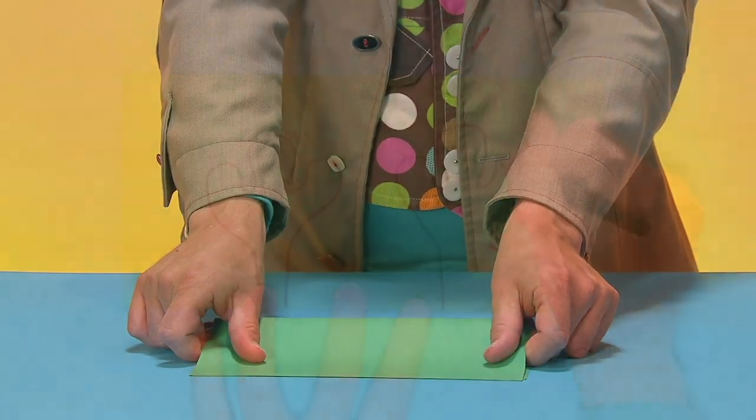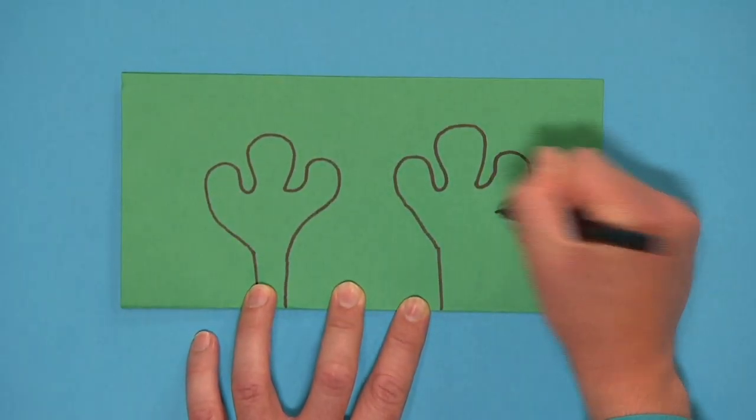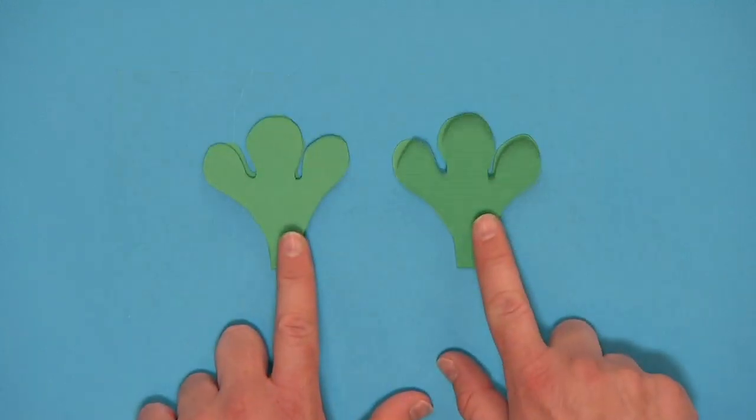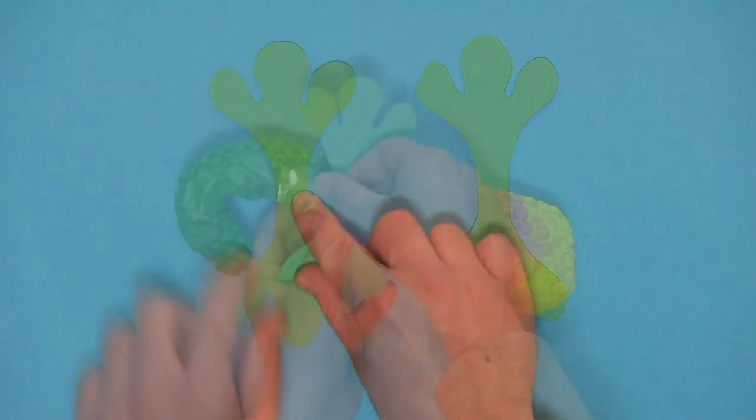Next, fold a piece of paper in half and draw two leg shapes starting at the fold like this. Then carefully cut them out. Unfold them and tape them to the body.